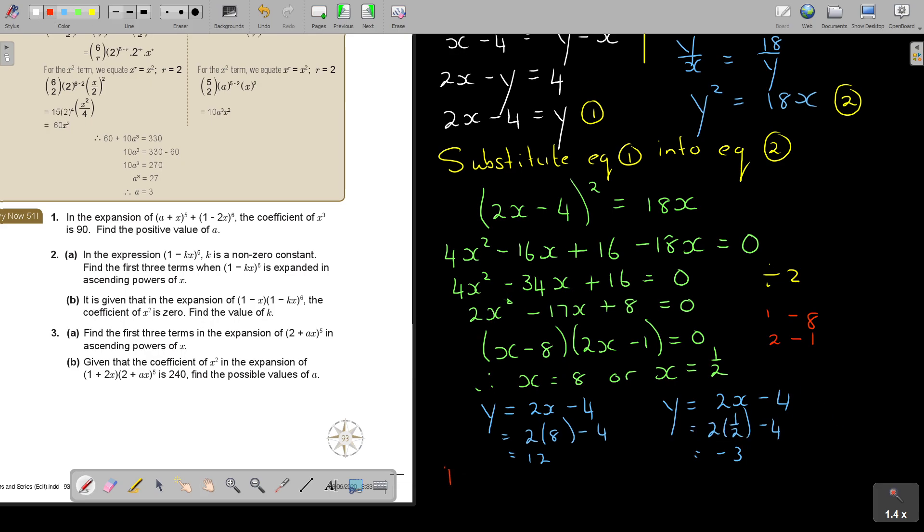So let's just end, both x and y must be positive. So I'm rejecting this half and negative 3. So therefore, x is 8 and y is equal to 12. And that's how you do an exam type of question.